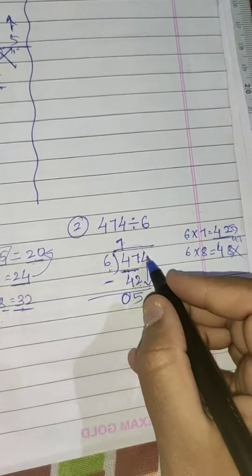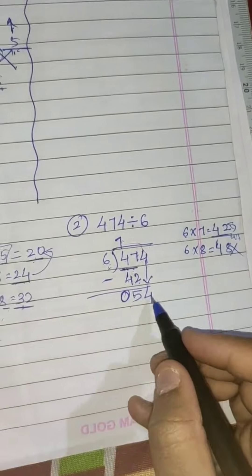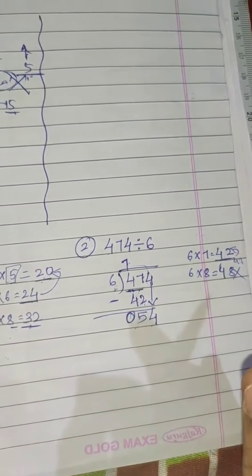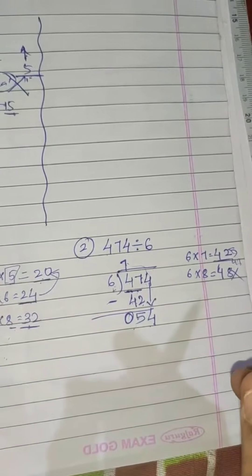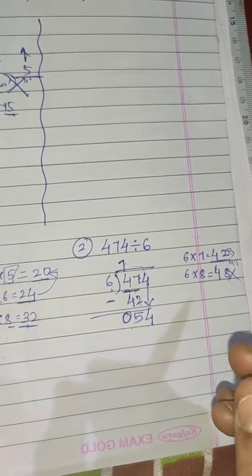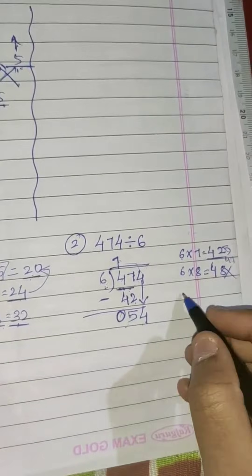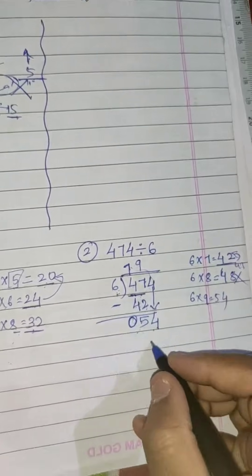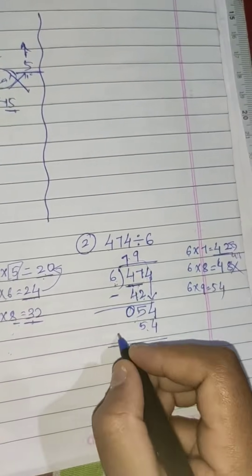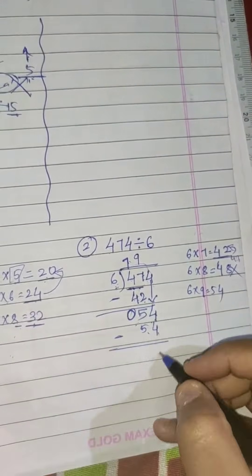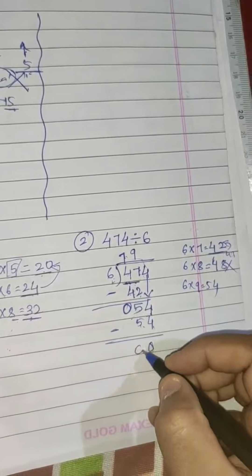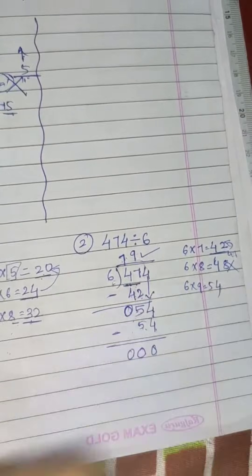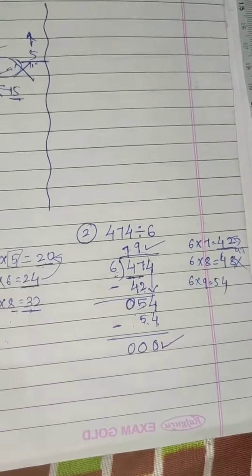Bring down the next digit, which is 4, making it 54. Now read the 6 times table to get 54. 6×9=54 — we get the exact number. Write 9 in the quotient and subtract: 4 minus 4 is 0, 5 minus 5 is 0. So the quotient is 79 and the remainder is 0.